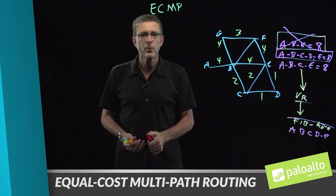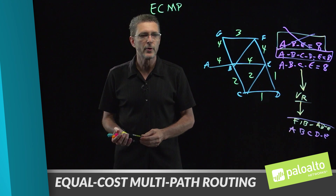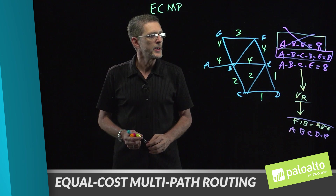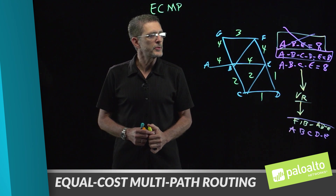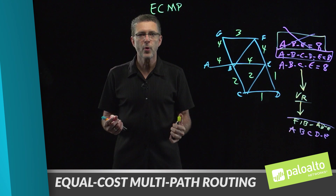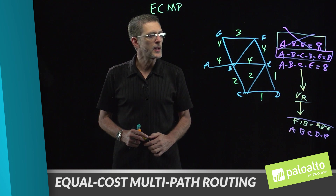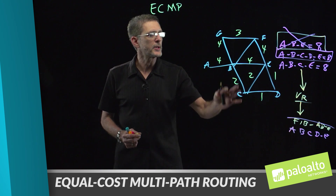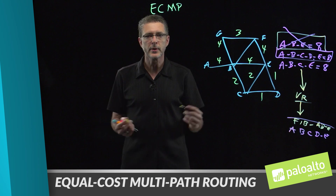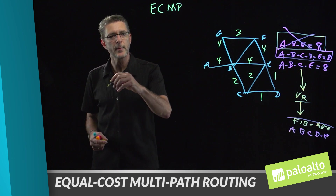The benefit of having equal cost multipath routing enabled on the firewall is it allows you to take up to four equal cost routes and load balance across the various links. Let's take a look at a second example.